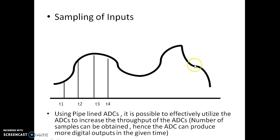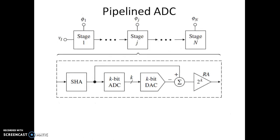Using a pipelined ADC it is possible to effectively utilize the ADC to increase its throughput. In this pipelined ADC, the waiting of the coarse flash ADC while the fine flash ADC is converting is minimized and nullified, giving us a greater throughput — that is, the number of samples obtained will be more. For example, instead of only 4 samples we can get 8 samples within the same given time period, so the ADC produces more digital outputs within time T1 to T4.